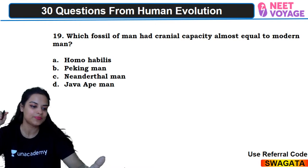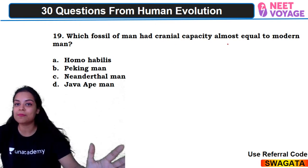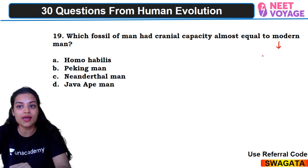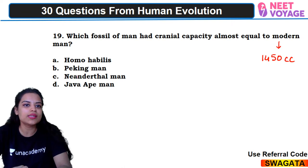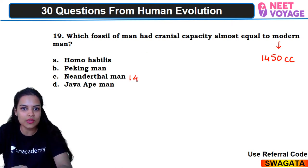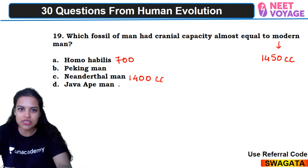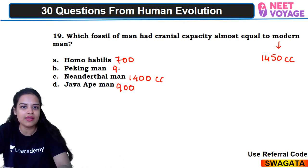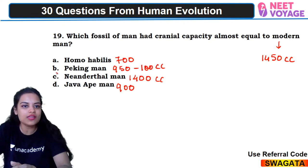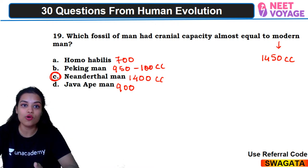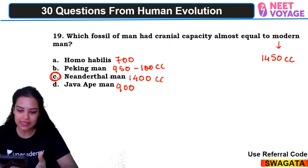Nineteenth question: which fossil of man had cranial capacity almost equal to modern man? Modern man has 1450 cc. Neanderthal man had 1400 cc — that's closest. Homo habilis had around 700 cc, Java man around 900 cc, and Peking man around 950 to 1000 cc. So C — Neanderthal man — would be the right answer. Divyansh and Ram Prasad answered correctly.